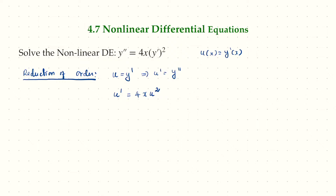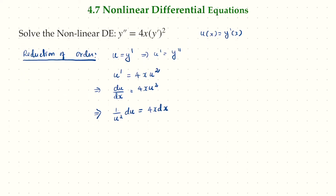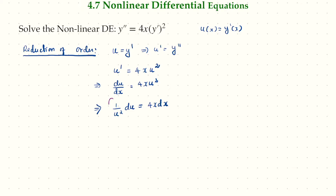By staring at this equation, we can use the variable separable method. Rewriting u prime as du/dx equals 4x·u squared, we separate variables: (1/u²) du = 4x dx. Integrating both sides gives u to the negative one on the left and x squared plus c on the right, with a negative sign. Simplifying, we get u equal to negative 1 over (x squared plus c).